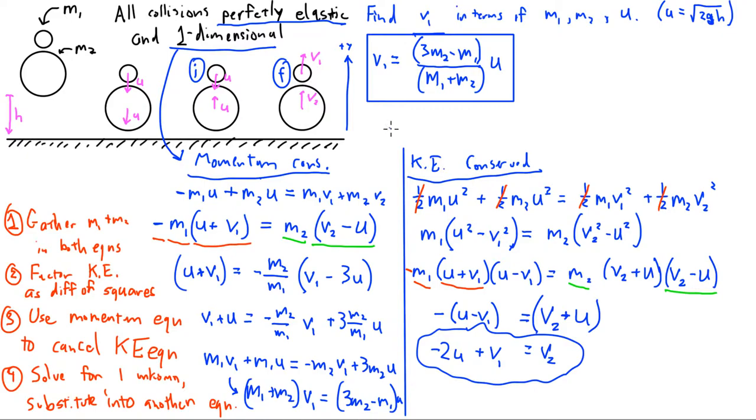One thing to note is that if M2 is much, much bigger than M1, then V1 is going to equal - when M2 is much bigger than M1, basically 3M2 minus M1 is just going to be 3M2, and M1 plus M2 is just going to be M2. So what happens is if M2 is much greater than M1, then V1 ends up being three times U.